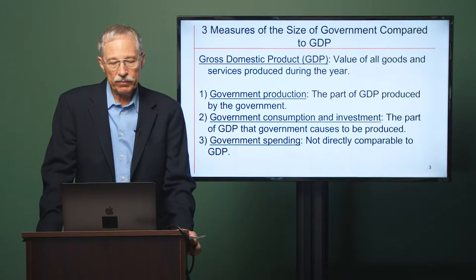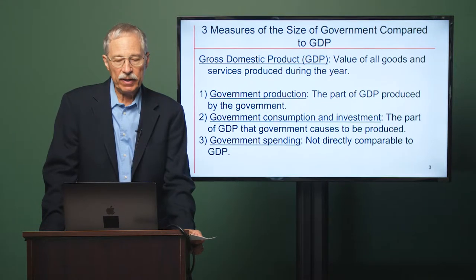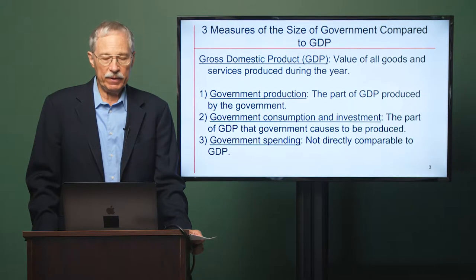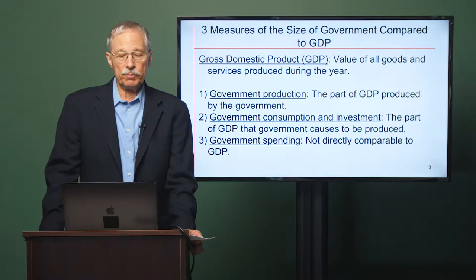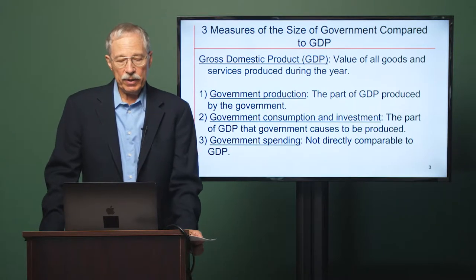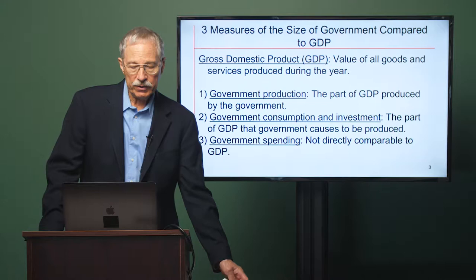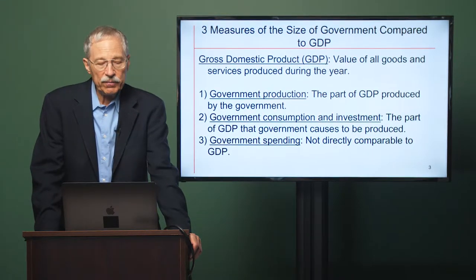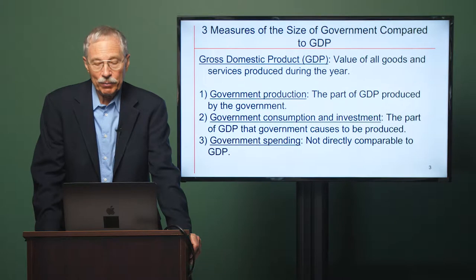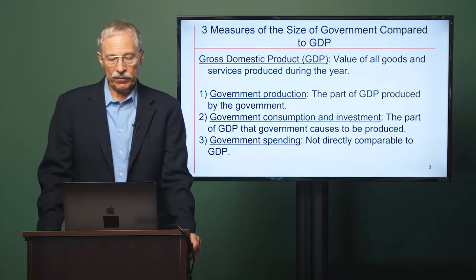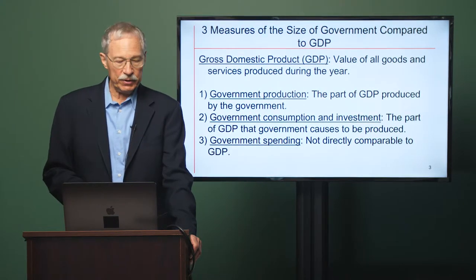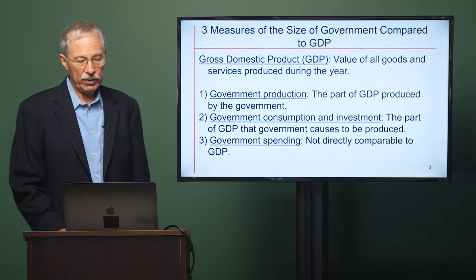These measures give you different results about how big the government is relative to the economy. The usual measure of the size of the economy is gross domestic product, GDP — the value of all goods and services produced during the year. Government production is the part of GDP actually produced by the government. Government consumption and investment can be thought of as the part of GDP that government causes to be produced, either by producing itself or by buying it from the private sector. The broadest category, government expenditure or spending, is not directly comparable to GDP because it involves a large element of transfer payments that do not involve producing anything.